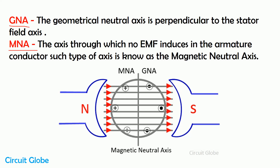In case of a DC generator or DC motor, any axis which is perpendicular to the stator field axis is known as the geometrical neutral axis. Here you can see in this image — this is the stator and this is the field axis. If we draw any line which is perpendicular to the field axis, then that line shows the geometrical neutral axis of the machine.